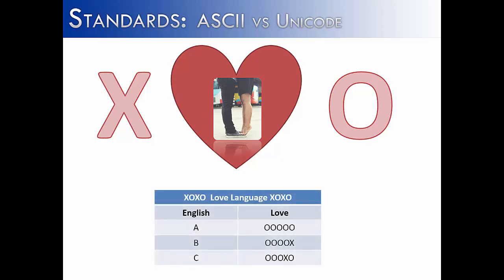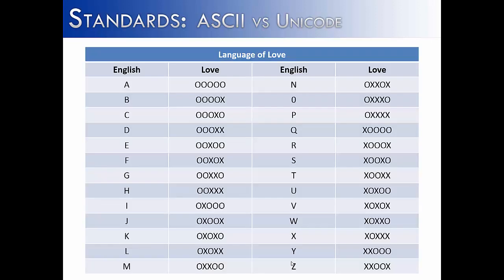So what we did is we sat down together and wrote down the language of love using five slots. Each one of the five slots is going to have either an O or an X. So A is going to be the pattern five O's, B is going to be the pattern four O's and one X, and C is going to be the pattern three O's, one X, and an O at the end. We could do this just using the letters X and O and establish an entire language. Our language of love is only going to have capital letters — because when you say anything in the language of love, it has to be uppercase, screaming it out loud. We've created a unique pattern for every single letter in the alphabet.